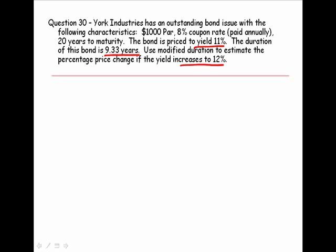Well let's write down our formula. Delta P divided by P equals negative D times the change in yield over 1 plus the yield. We were given that this bond has a duration of 9.33. So we will write negative sign, 9.33.